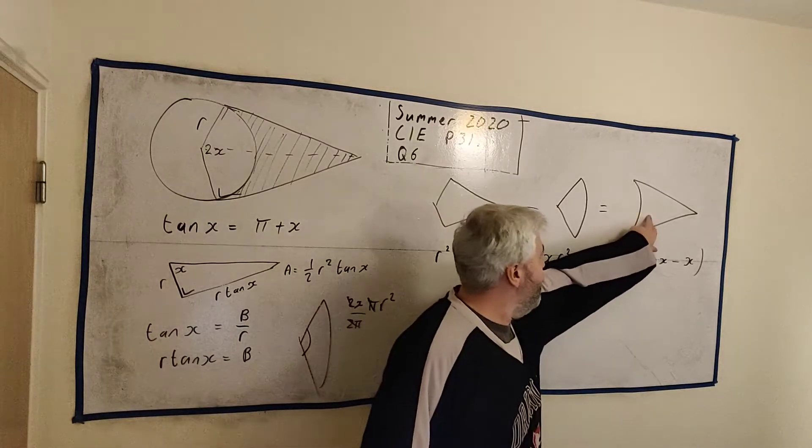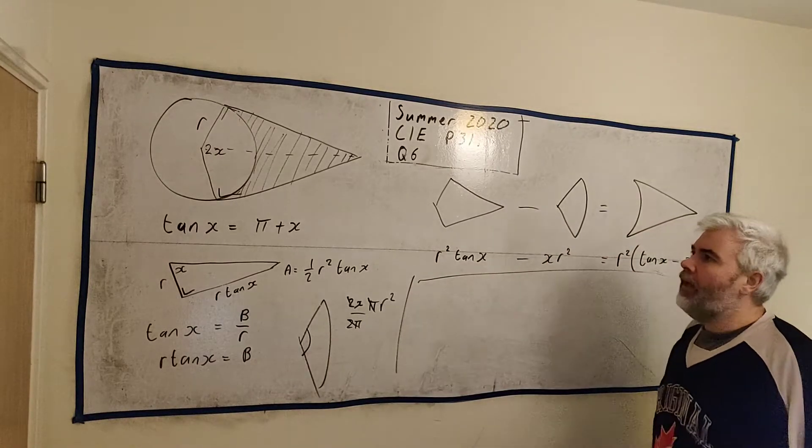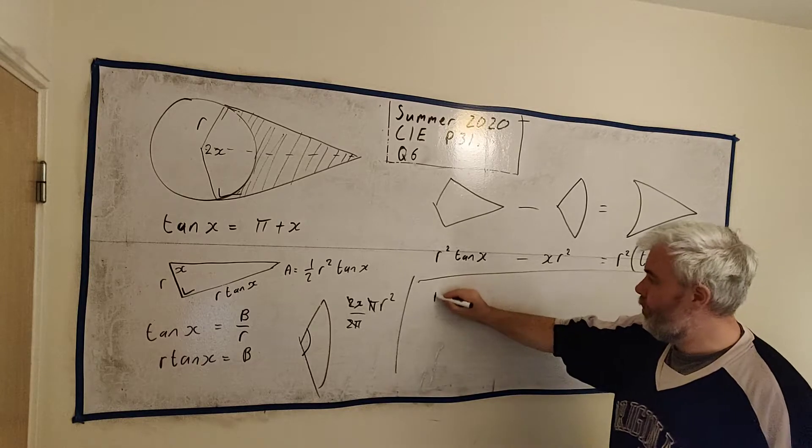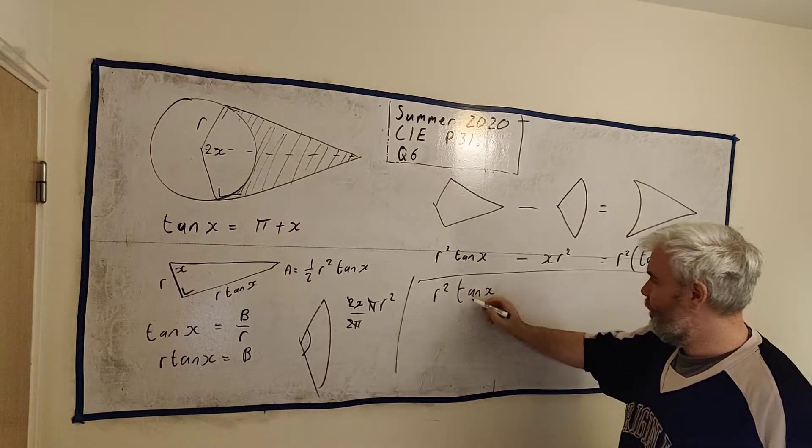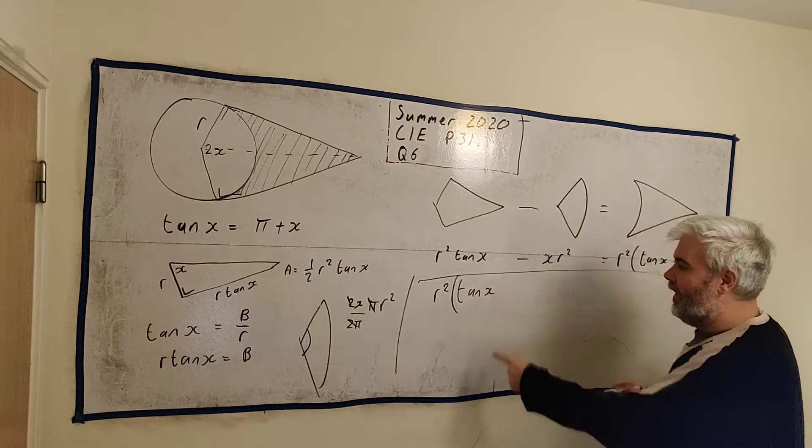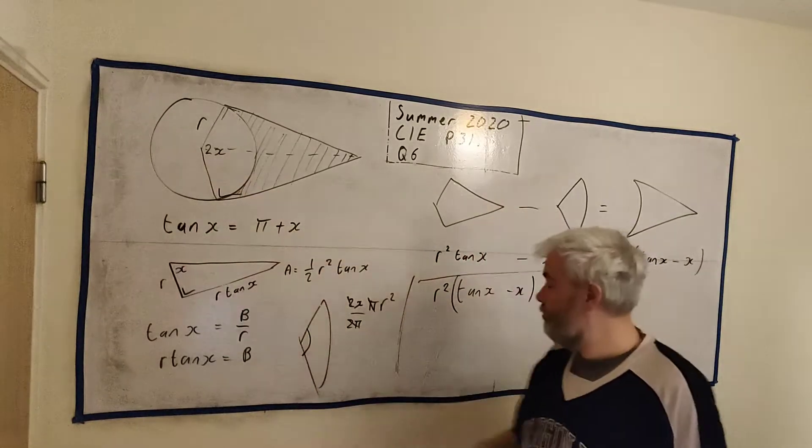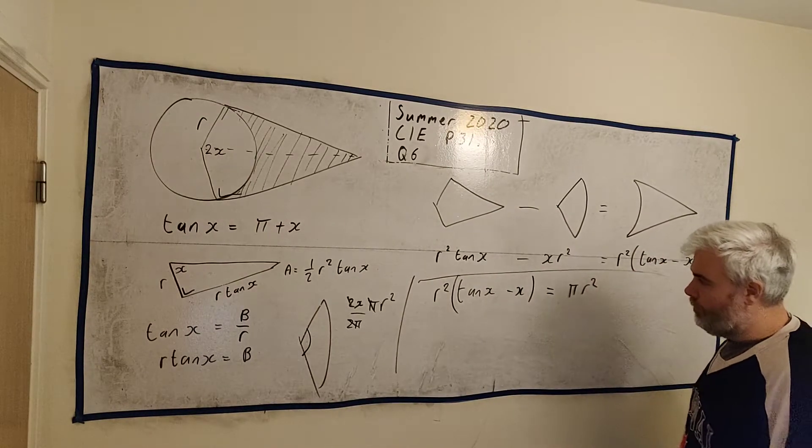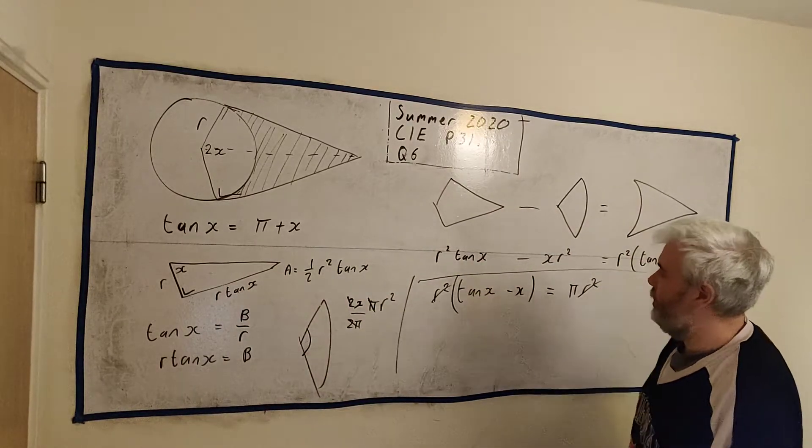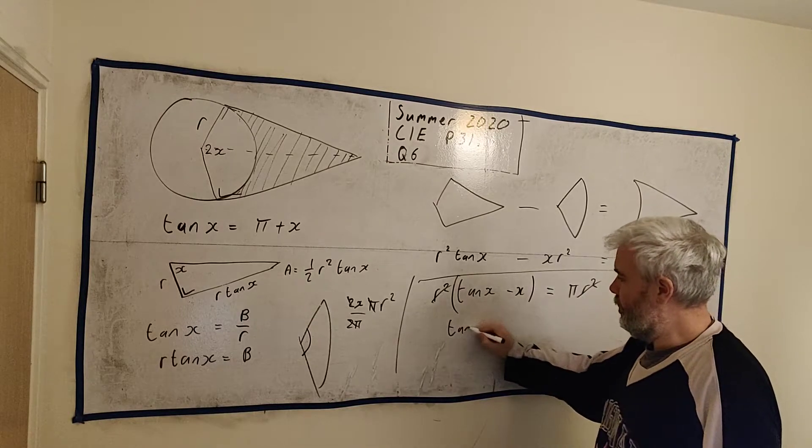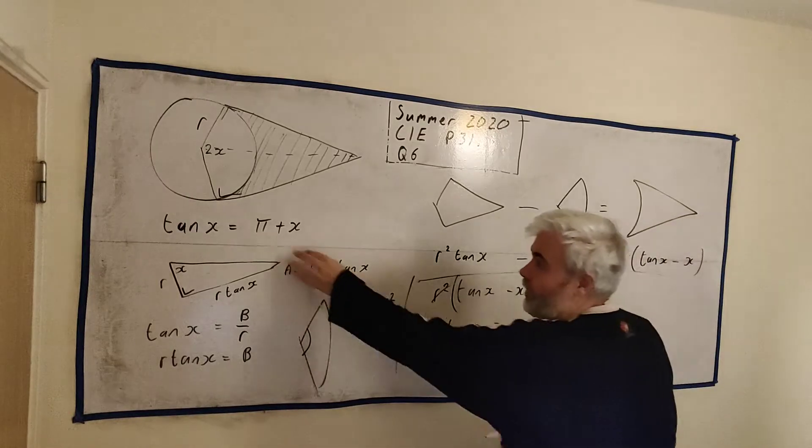And so the number we want is equal to r squared times tan(x) minus x. That's the area of this shaded shape here. And remember what they told us. They told us the shaded region, r squared times tan(x) minus x, is equal to the area of this circle. The area of the circle is pi r squared. We're about to find this. We have r squared on both sides. Let's cancel that. And we just have tan(x) minus x equals pi. Add x to both sides: tan(x) equals pi plus x. And that's what they wanted us to find.